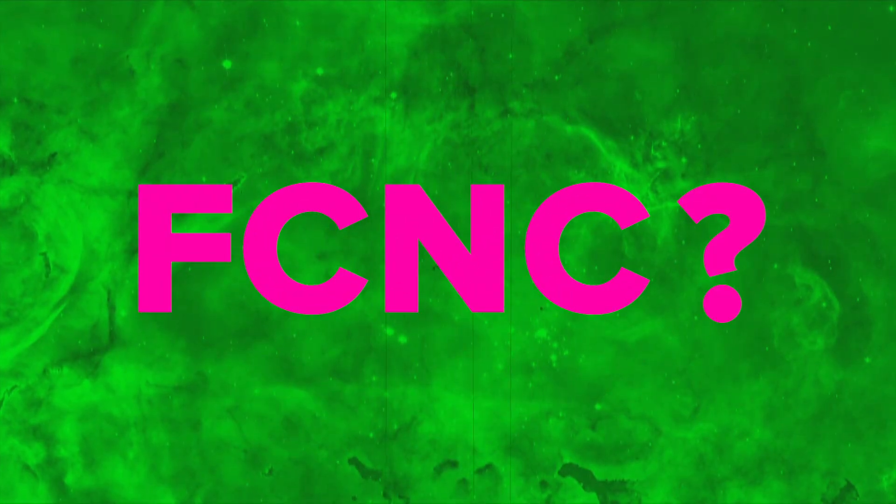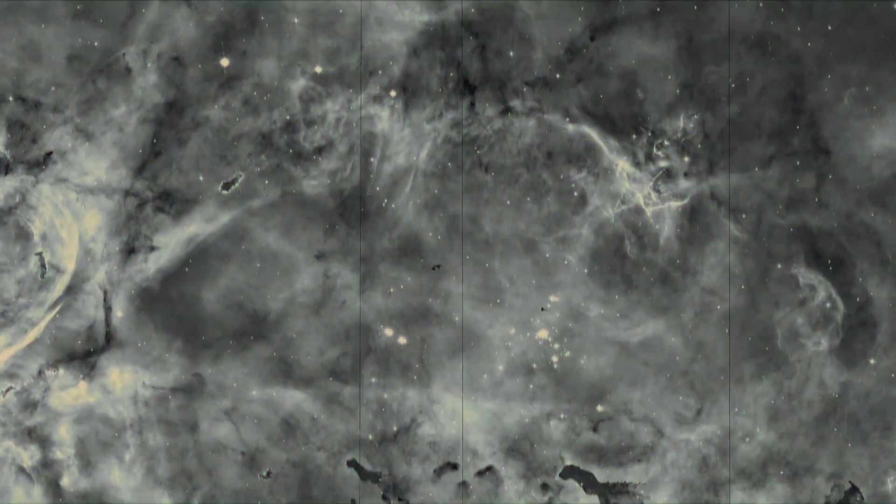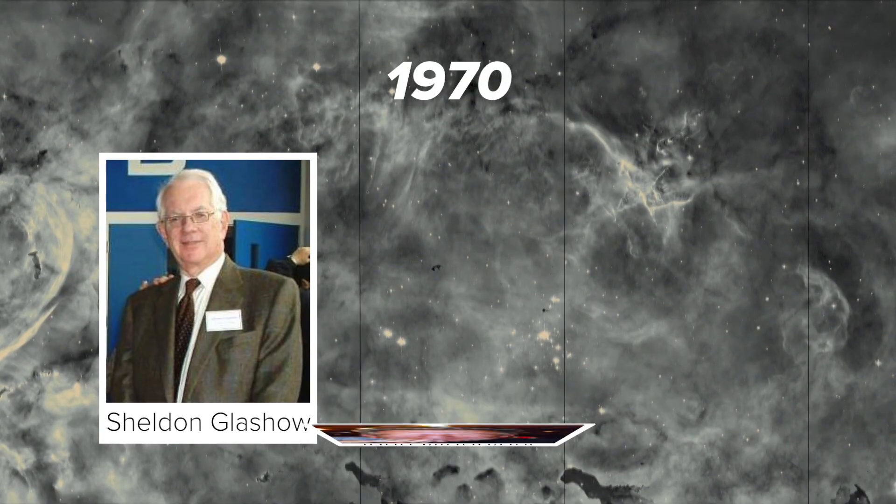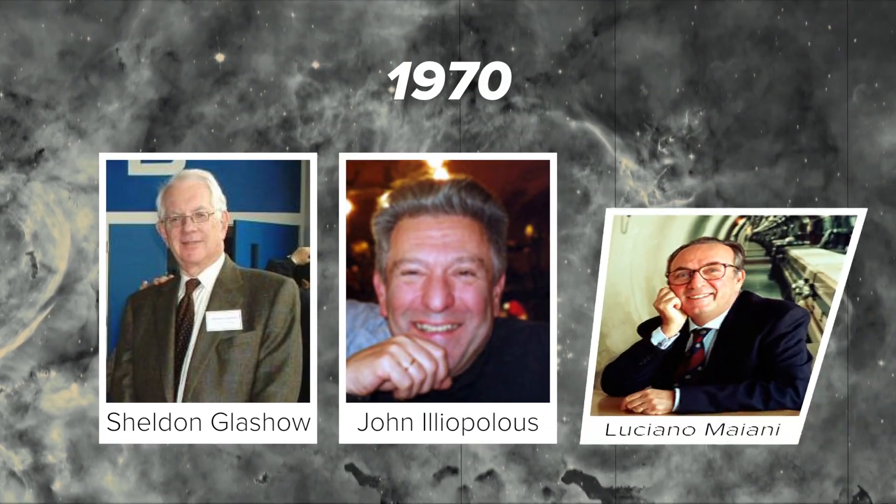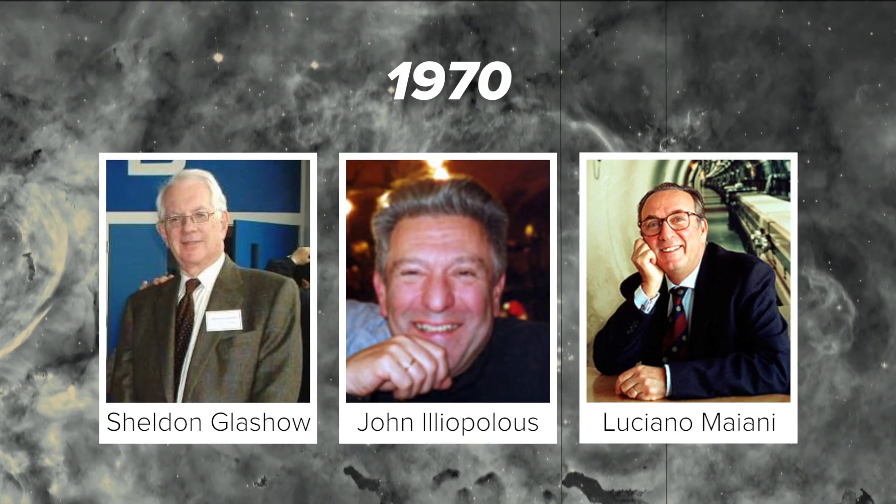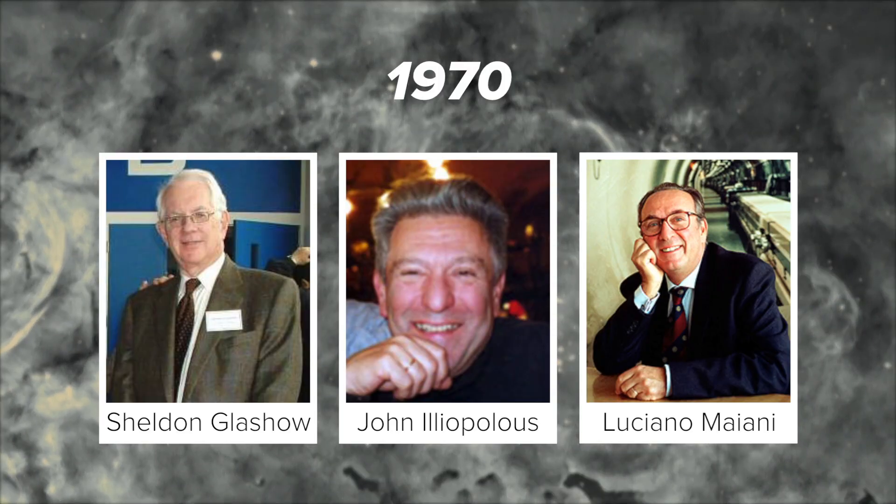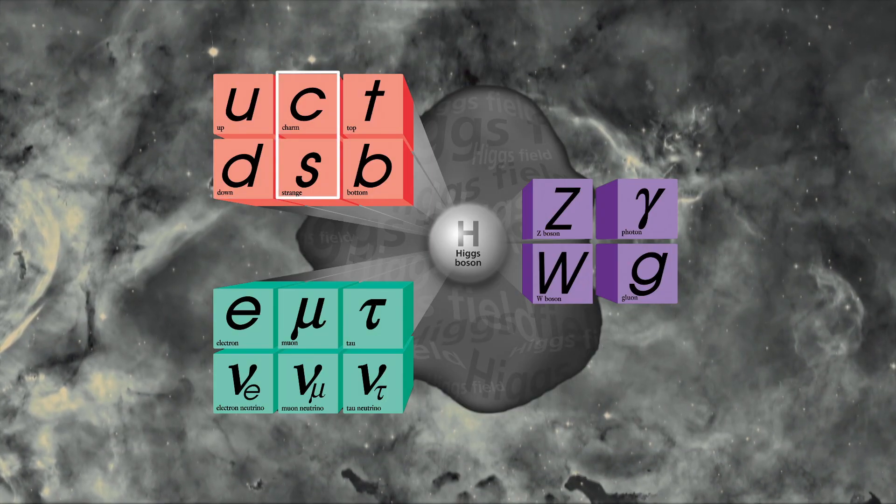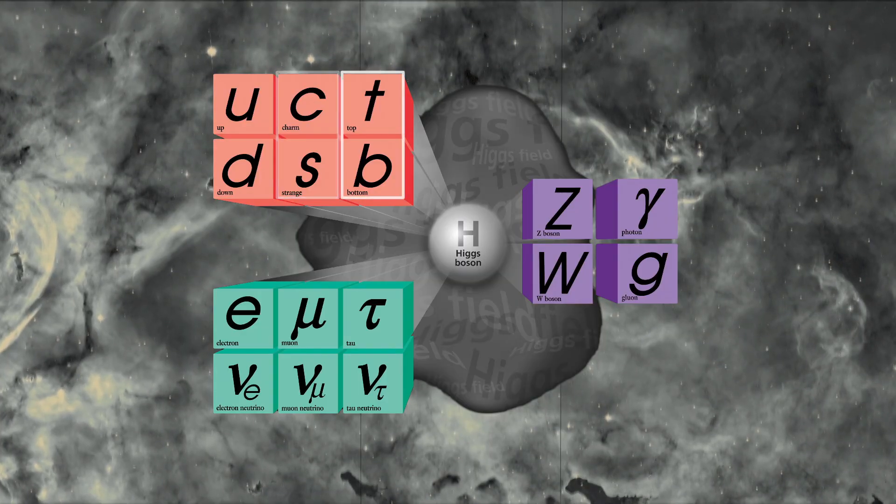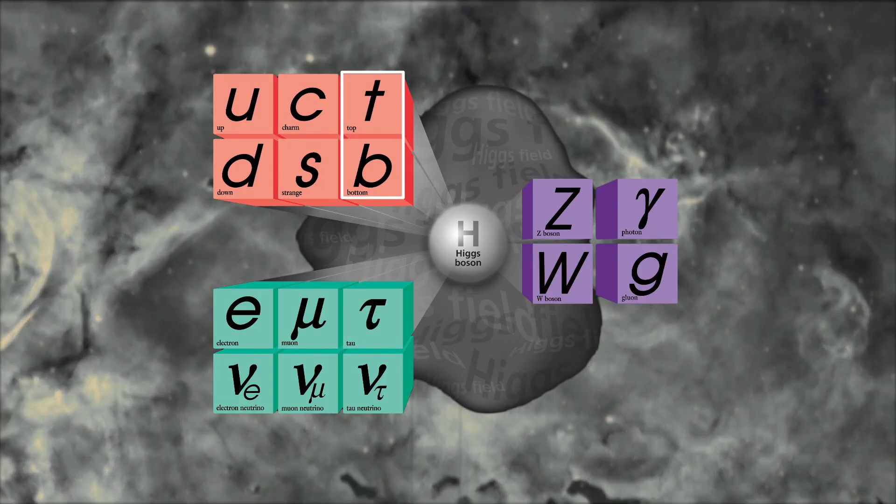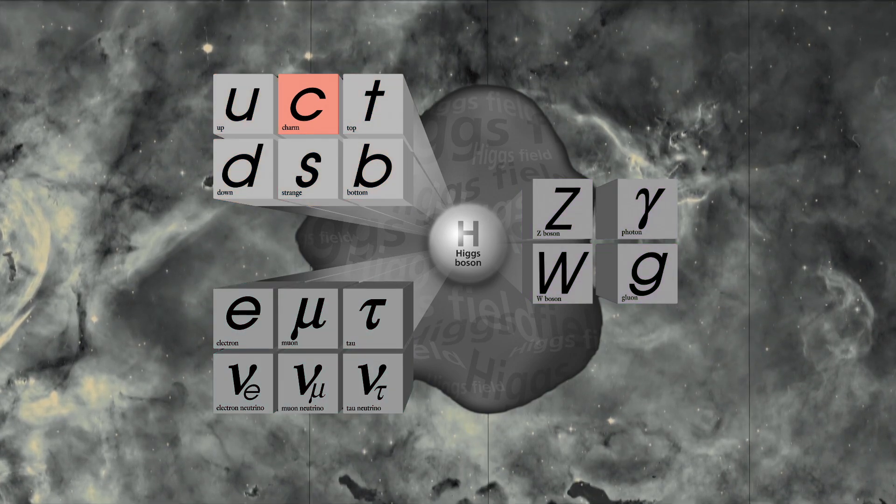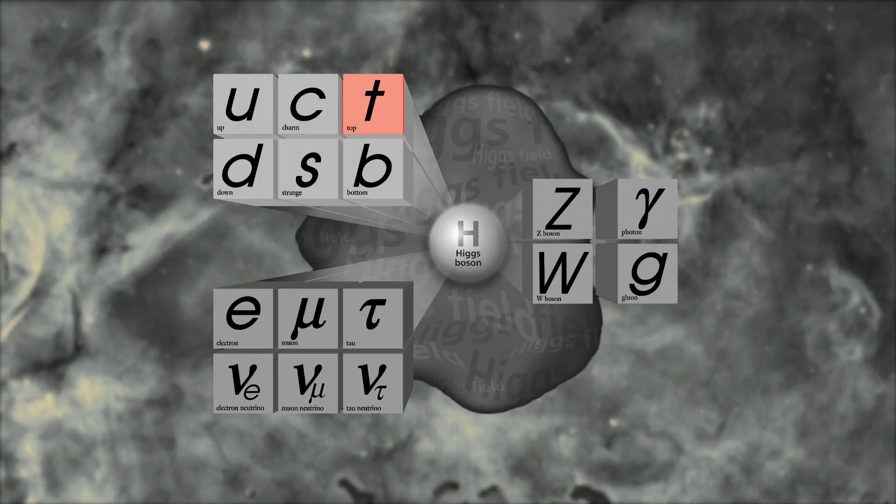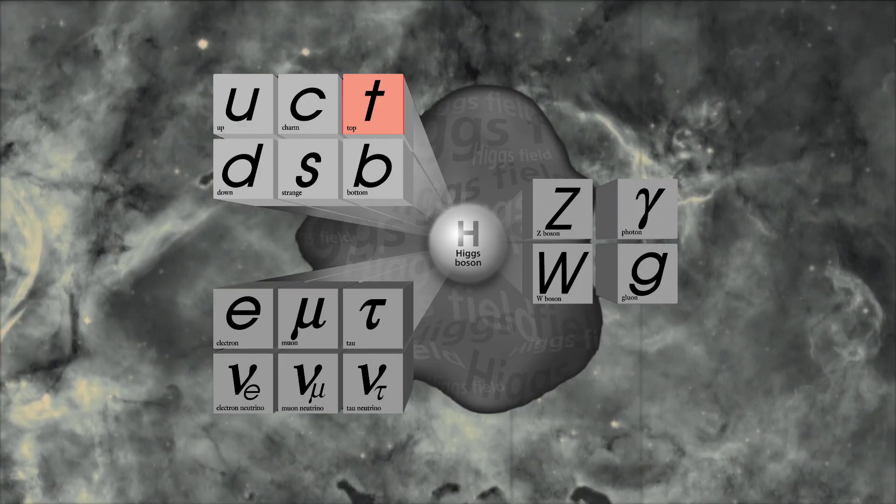So have FCNCs been observed? No. And that was a pretty mystifying thing until 1970 when Sheldon Glashow, John Iliopoulos, and Luciano Maiani were able to show that flavor changing neutral currents were forbidden if quarks came in matched pairs, one with a charge of plus two thirds and the other with the charge of minus a third. That's why scientists were pretty sure that the charm quark existed before it was discovered in 1974 and that the top quark existed before its discovery in 1995.